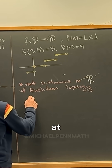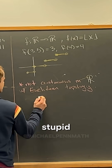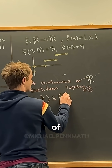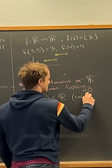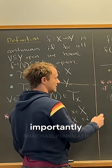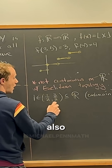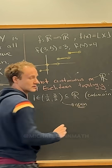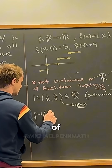Let's look at the interval (1/2, 3/2) as a subset of ℝ, thinking about it as the codomain. That's over here. Importantly, 1 is an element of this interval. Now let's look at the pre-image of this interval. We can all agree that this interval is open.